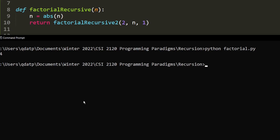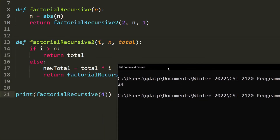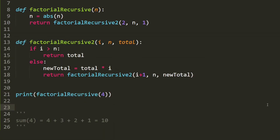Let's test it — factorial_recursive of 4 should also be 24, and as you can see it produces the correct output. That's basically it for today. In the next video I'll show you how to find the sum of a number — for example, the sum of 4 would be 4+3+2+1=10 — using both a for loop and recursion. Hope you enjoyed this video; don't forget to like and subscribe!